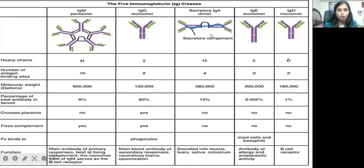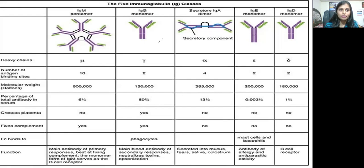First, let's move on to the different classes of antibodies. There are five classes of antibodies: IgG, IgM, IgA, IgE, and also IgD. We will discuss them one by one. The first antibody is IgM.